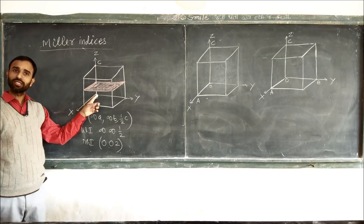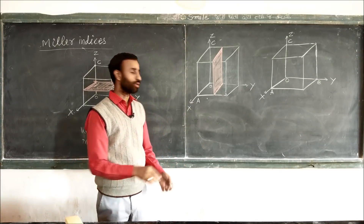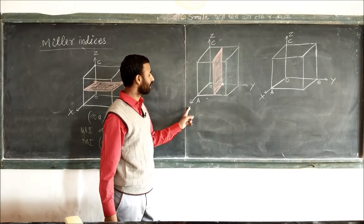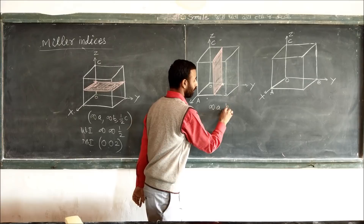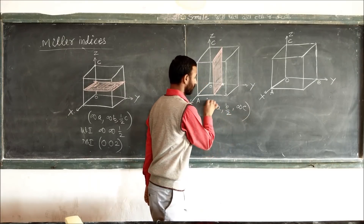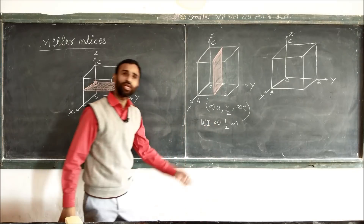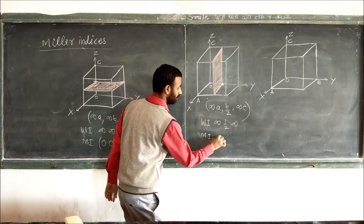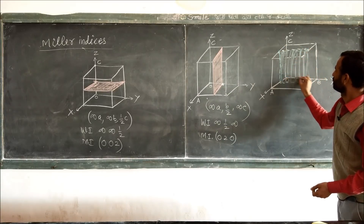The plane cuts only the z-axis at half of the unit distance. Now this plane cuts only the y-axis at B/2. It cannot cut x or z. With respect to x it is infinite, the y intercept is B/2, and z is infinite. The Weiss indices are infinity, 1/2, infinity — which cannot be defined — so we convert to Miller indices: 0, 2, 0.